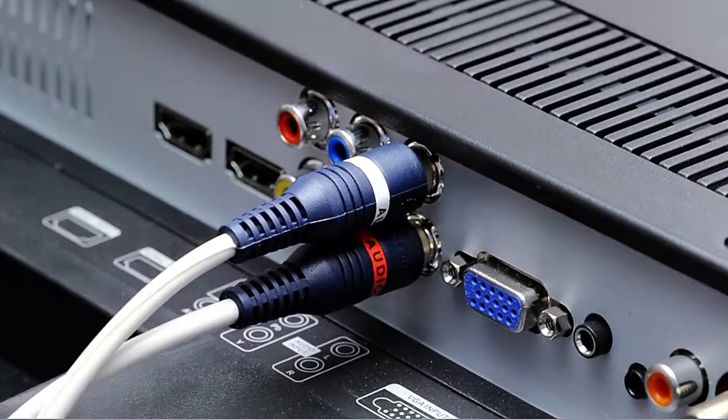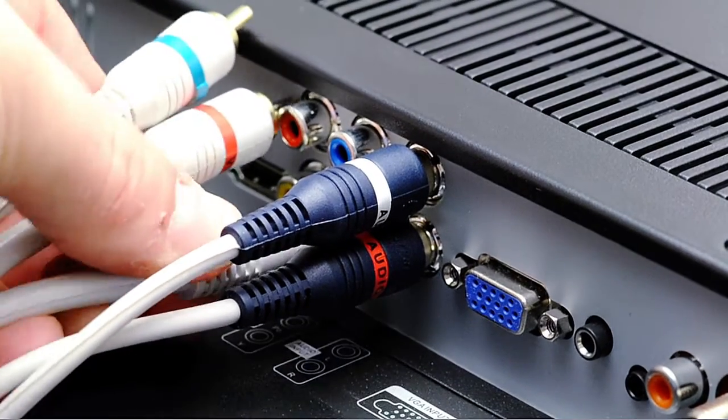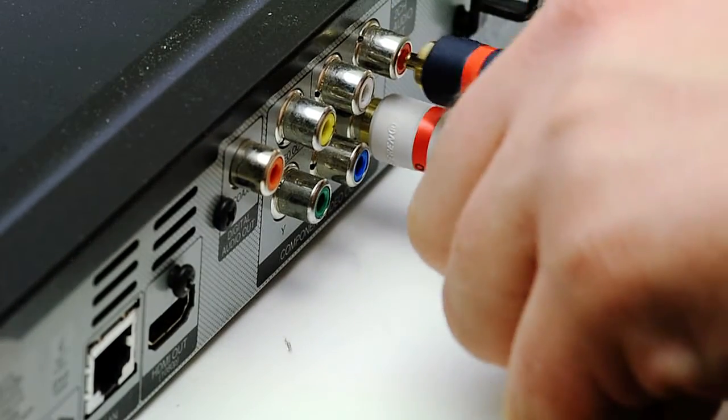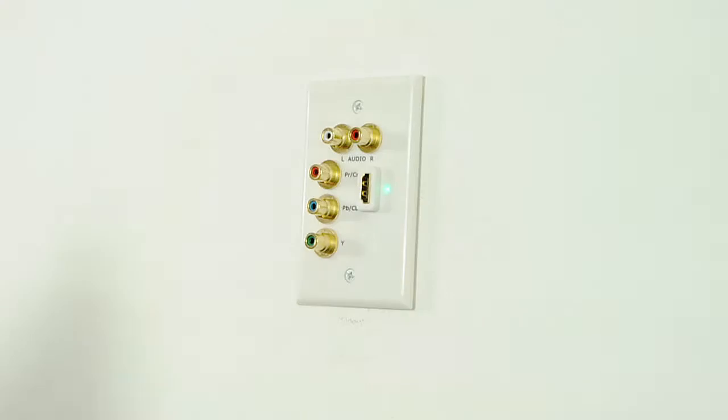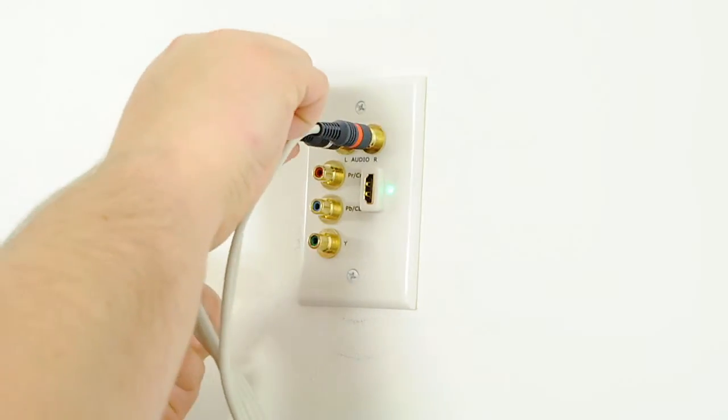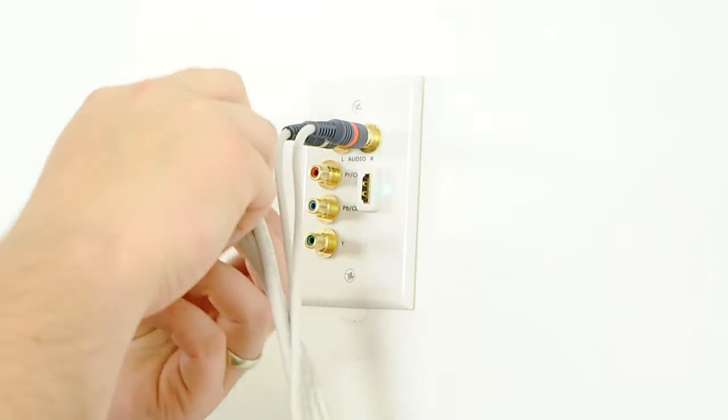A wall plate also reduces stress on the in-wall cable. Over time, cables that are continually used often fail at the connector. By terminating the in-wall cable at a wall plate, you reduce stress on the installed cable.